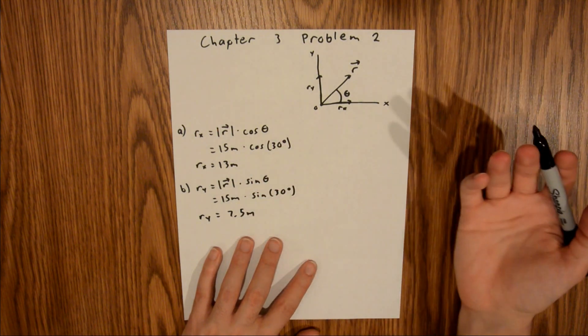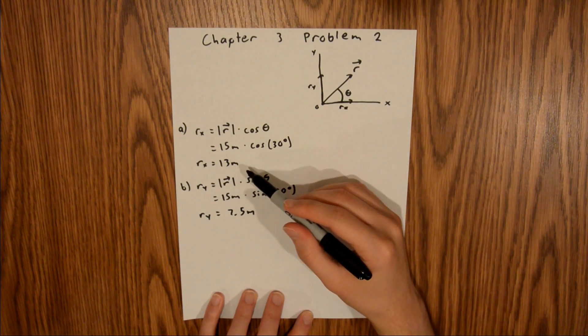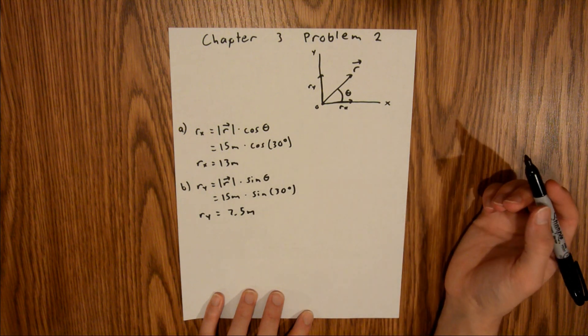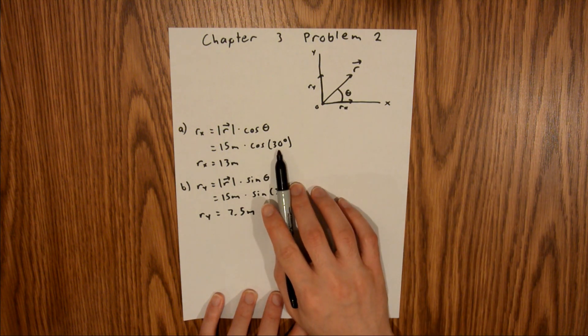So it makes sense that both of these are positive. And it also makes sense that our x component is larger than our y component because our angle is less than 45 degrees.